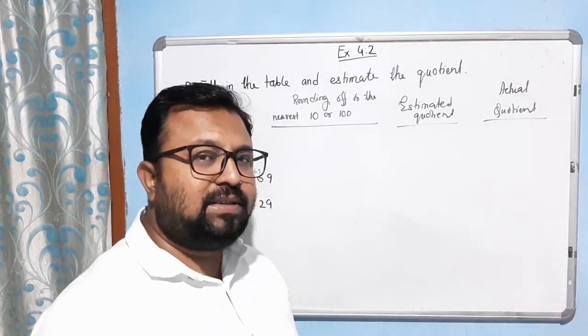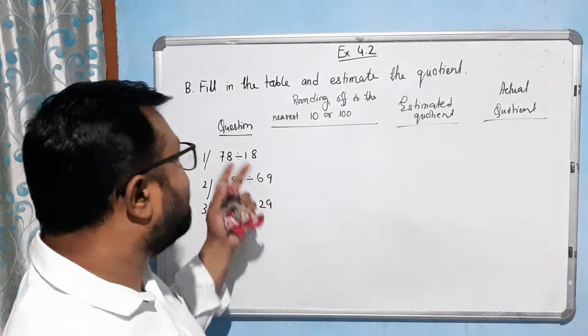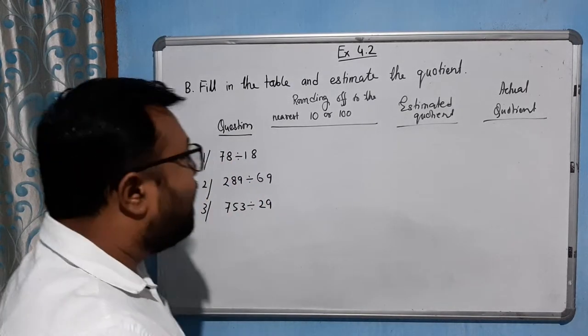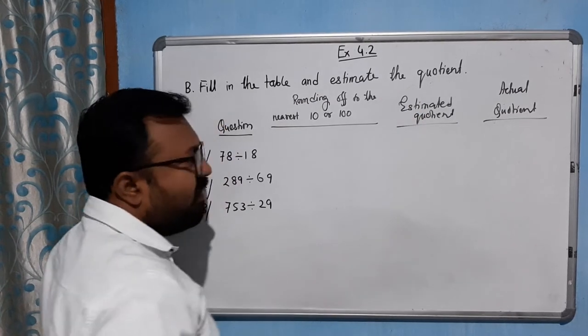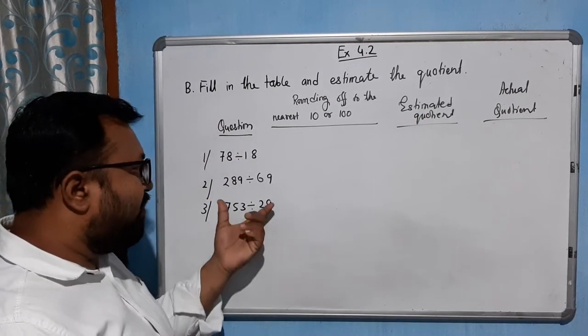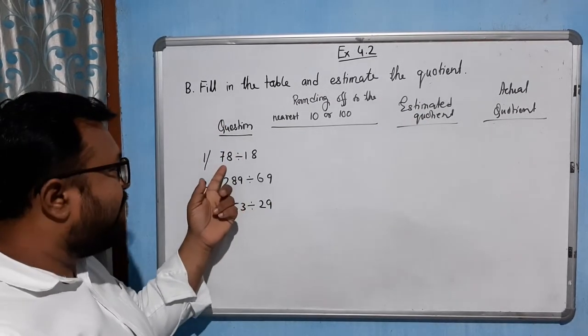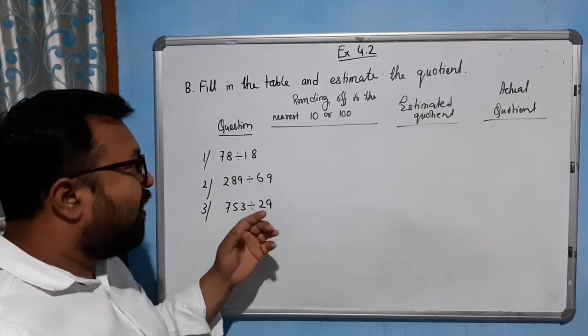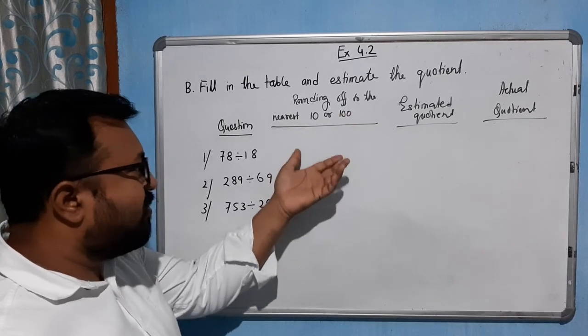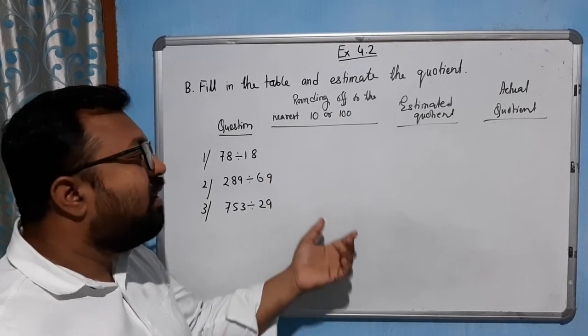Hello students, let's do the next part of this exercise. Question B: Fill in the table and estimate the quotient. There are some values given: 78 divided by 18, 289 divided by 69, 753 divided by 29. We need to round off these values to nearest 10 and nearest 100.